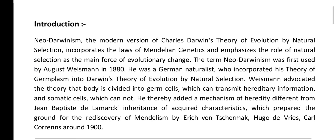New Darwinism is the modern version of Charles Darwin's Theory of Evolution by Natural Selection. It incorporates the laws of Mendelian genetics and emphasizes the role of natural selection as the main force of evolutionary change. The term New Darwinism was first used by August Weismann in 1880, a German naturalist who incorporated his theory of germ plasm into Darwin's Theory of Evolution by Natural Selection.